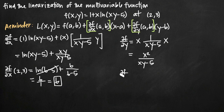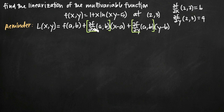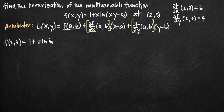Plugging in the point (2,3), the partial derivative of f with respect to y at (2,3) equals 2² over (2·3 - 5), which is 4 over 1, or just 4. Now we find f(2,3) by plugging the point into the original function: f(2,3) = 1 + 2·ln(2·3 - 5) = 1 + 2·ln(1). Natural log of 1 is 0, so this gives us just 1.